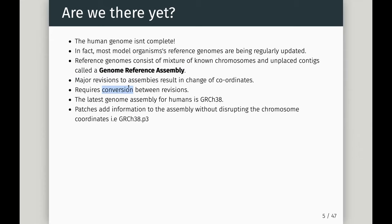Major revisions to a genome reference assembly include changes that shift coordinates — adding sequence that moves a gene's position maybe a few hundred base pairs. This means you can't easily transfer information between versions; you need to convert coordinates. The latest human genome is GRCh38, but we've had GRCh37 and 36. Changing major versions requires realigning or doing coordinate conversions. On top of major versions, there are minor patch versions, e.g., GRCh38.p3.